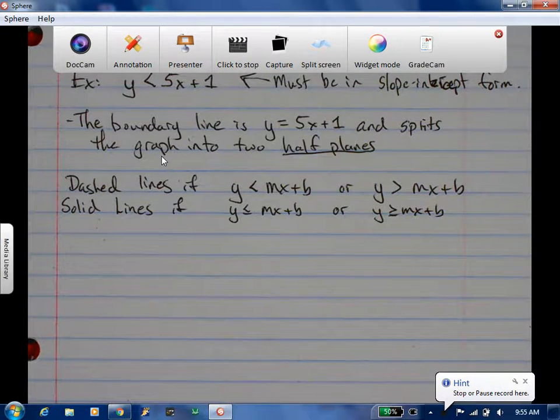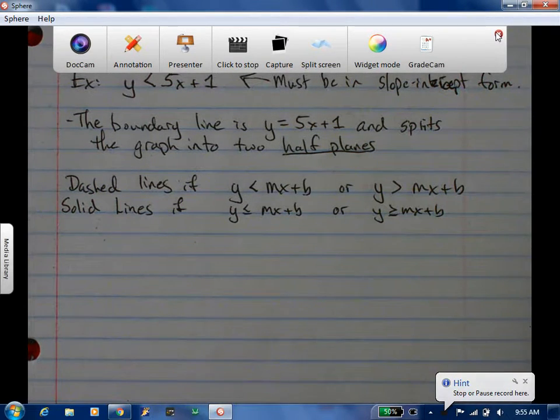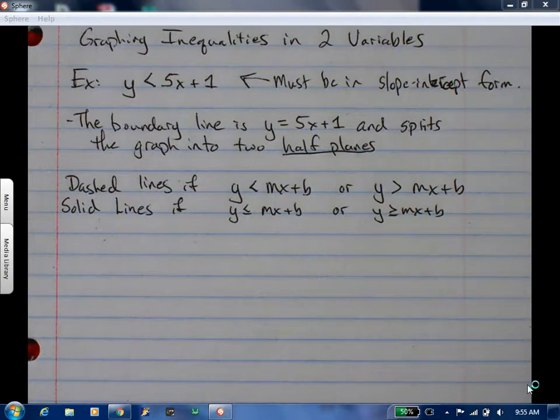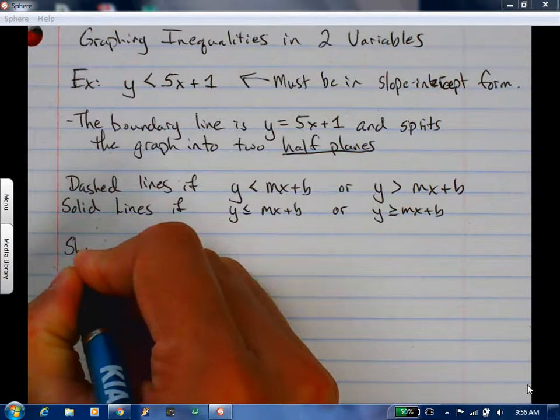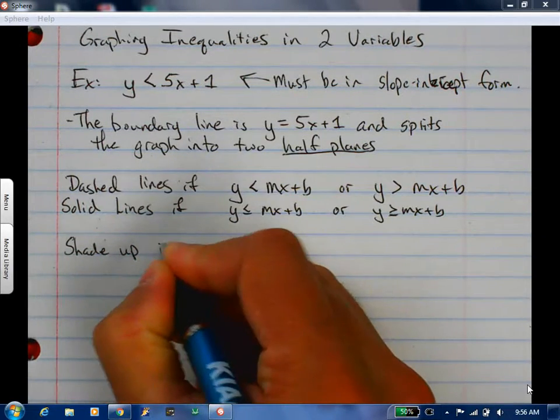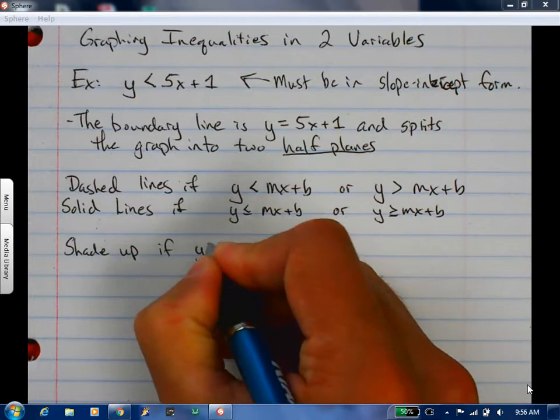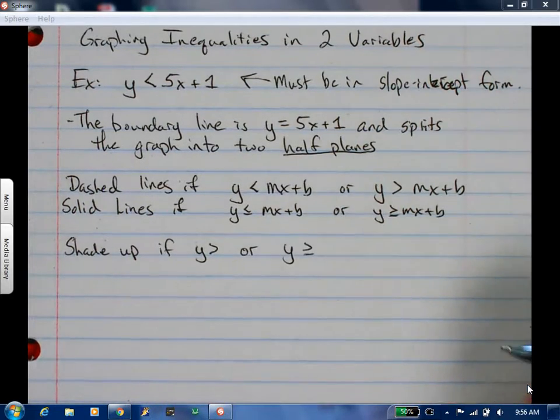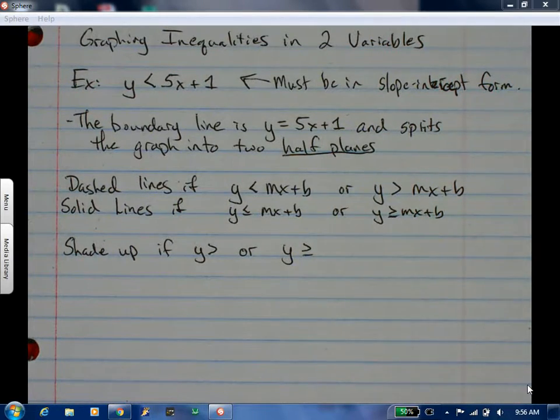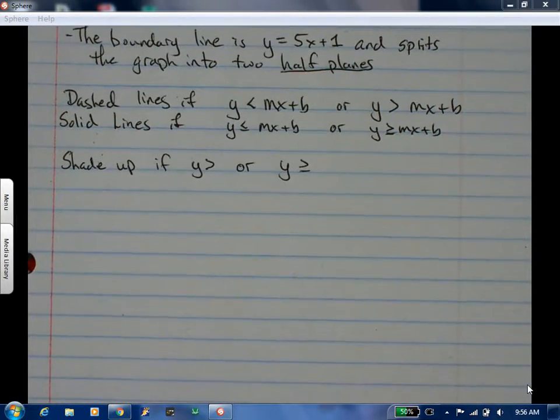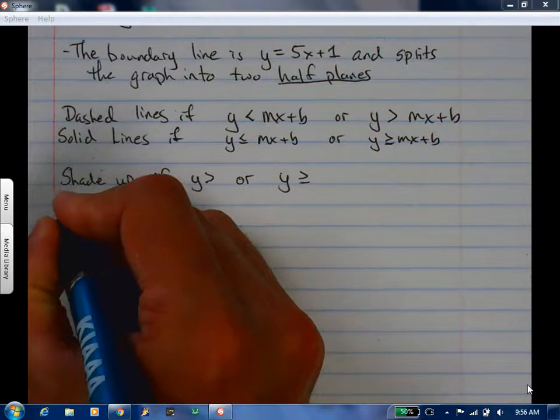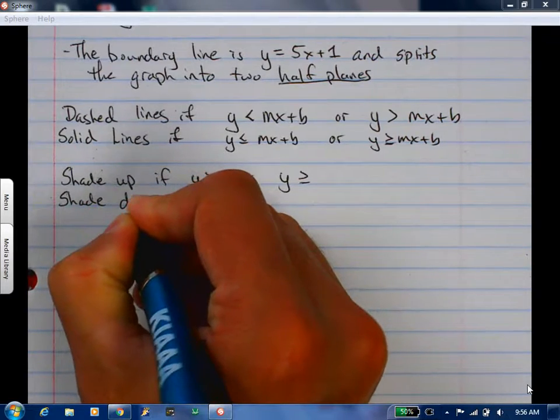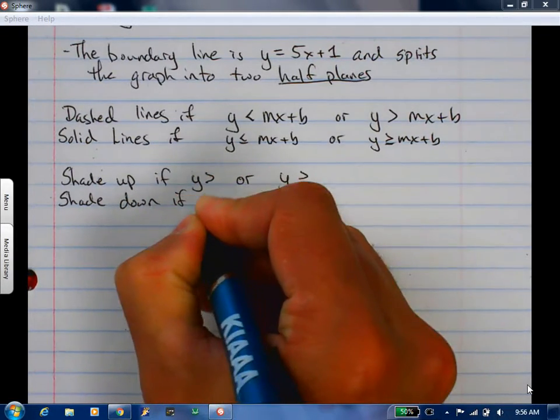If it can't equal, then you just look at what you have. You're going to shade up if y is greater than or y is greater than or equal to mx plus b. You shade down if y is less than or y is less than or equal to.